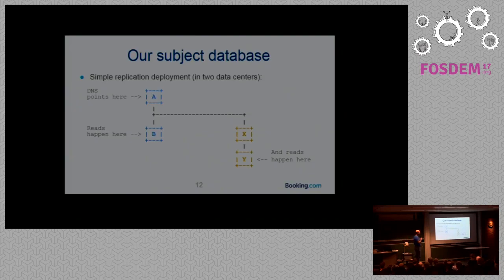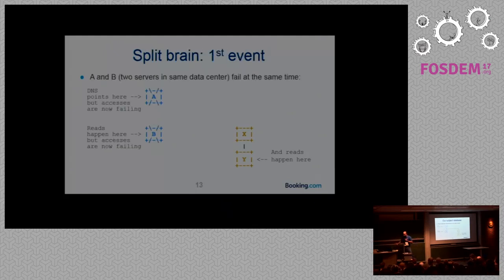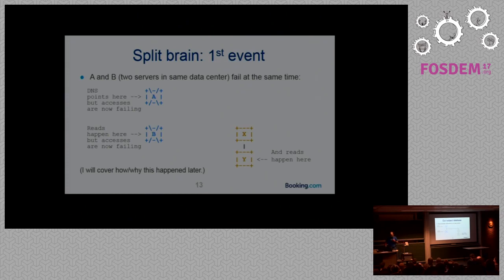Orchestrator doesn't know we use DNS. So when it does a failover, it calls a script, which is one of our scripts at Booking, to repoint DNS. And this is the script that was a problem. So before looking into the problem, we'll look at the deployment where we had a problem. It's a very simple deployment. There are four database servers: A as the master, B as the local slave, X as a remote data center intermediate master, and Y as a remote slave.